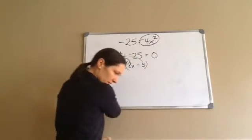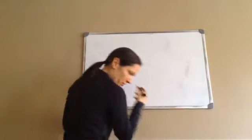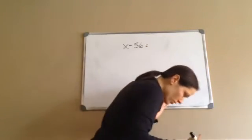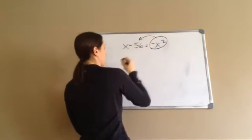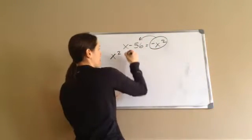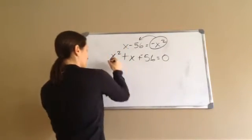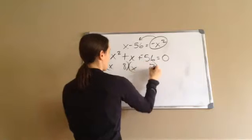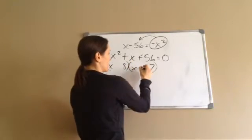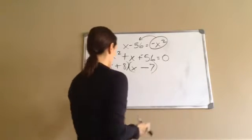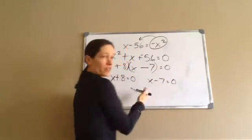Let's do the third example. This next one is a little different but not too hard. Here's what it says: x minus 56 equals negative x squared. Again this is not in standard form. So let's put it in standard form — moving negative x squared across makes it positive x squared, plus x, plus negative 56, equals 0. Then we factor: x and x, and 8 times 7 gives us 56. I want negative 56 but a positive sum when adding, so I'll put the negative with 8. So x plus 8 equals 0 and x minus 7 equals 0, and you figure out what x is.